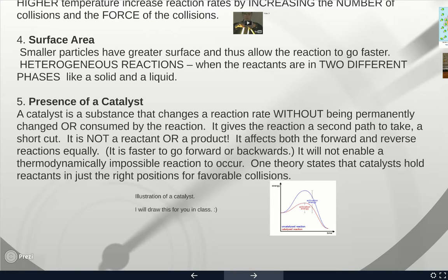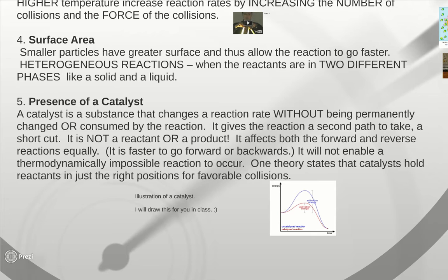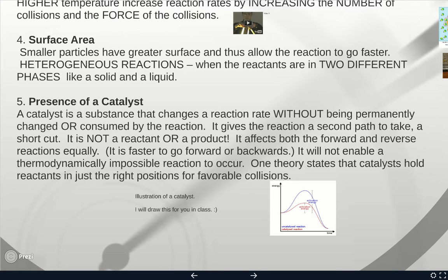All right, now the presence of a catalyst, it changes. A catalyst is a substance that changes the reaction rate without being permanently changed or consumed by the reaction itself. It gives the reaction a second path to take, a shortcut. It's not a reactant itself. The catalyst is not a reactant and it's not a product. It's just basically a shortcut. It lowers the activation energy. Okay, it will not enable thermodynamically impossible reaction to occur. So if something's not going to happen, it's not going to make it happen. It just makes the things that can happen faster. One theory states that a catalyst will hold reactants in just the right positions. In other words, turn them to face each other just right to make favorable conditions happen.